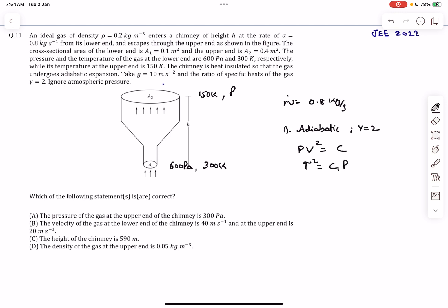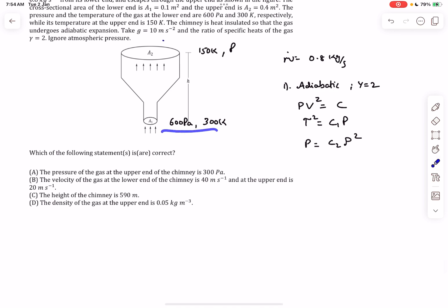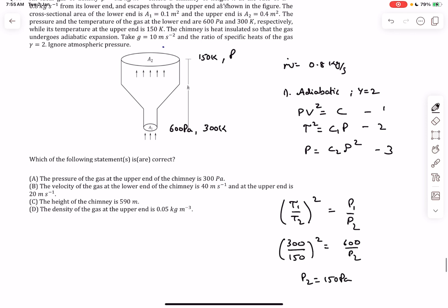In terms of density this would be p = C₂·ρ². The most useful would be the relation between temperature and pressure, equation 2. With that we can say (T₁/T₂)² = p₁/p₂, and after solving you'll get the pressure at the topmost point as 150 Pa, which means option A is wrong.